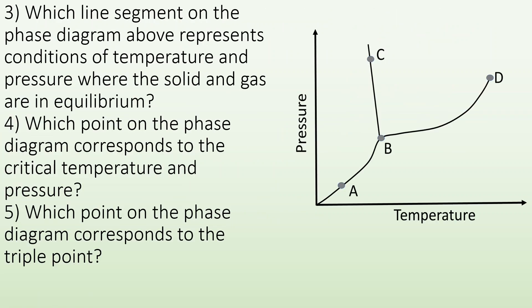Number three: which line segment on the phase diagram above represents conditions of temperature and pressure where the solid and the gas are in equilibrium? So here I have my phase diagram. Let's just label the phases real quick. I got solids over here, liquids right here, and gas is there. That's something you should be able to do. So number three is saying hey, which line segment represents the temperature and pressures where solid and gas are in equilibrium? Solid and gas are in equilibrium along this line, so it's going to be line AB. From A to B, that's solid-gas equilibrium.